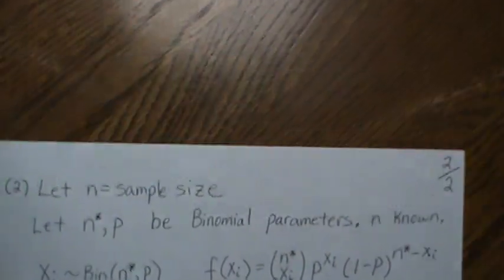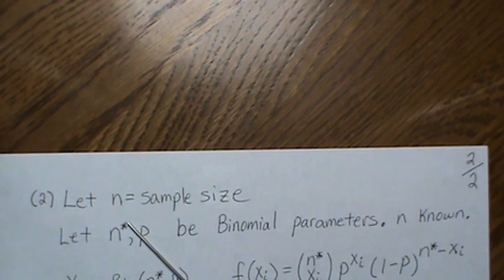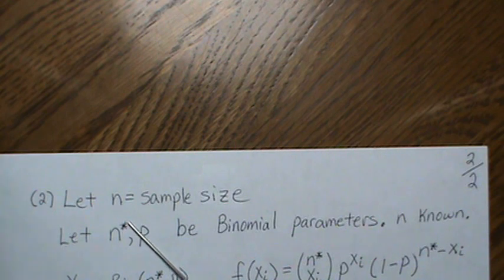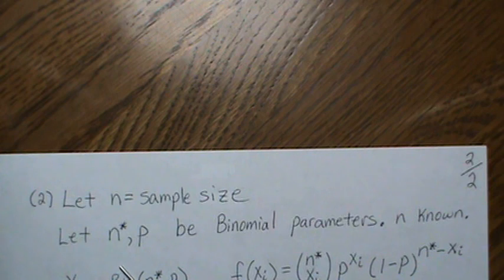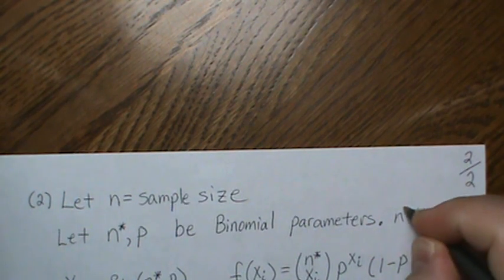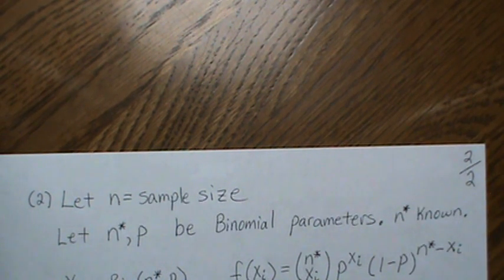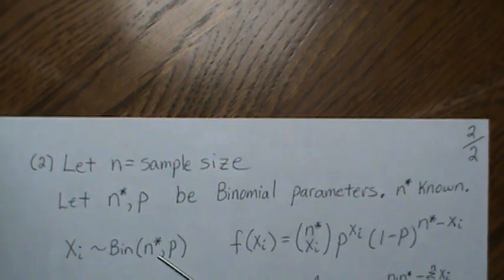So now to derive it for a binomial, we want to take samples of size n, and we're going to do it from a binomial distribution. And it has two parameters—n (I'm going to call it n star) and p—and we're going to assume that n star is known.